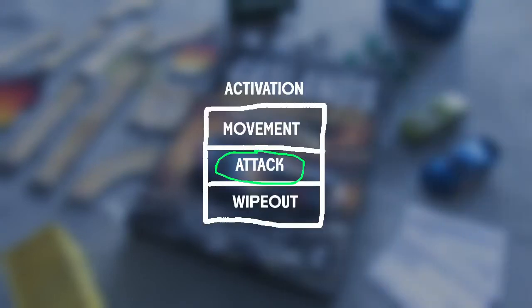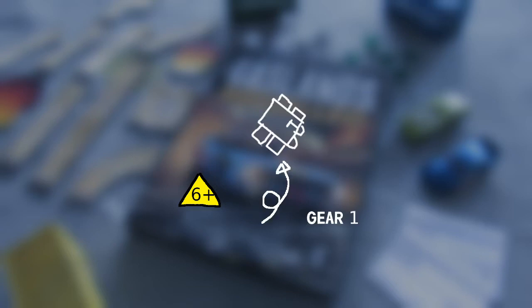That covers the basics of attacking, so now we are on to the final step of the activation, the wipeout step. In a nutshell, the wipeout step is fairly simple. If you have six or more hazard tokens, you proceed to wipeout. First you do a flip check and resolve the flip if you fail. Regardless of whether you flip check or not, you then proceed with the rest of the wipeout. The car will lose control, and you will reset to gear one. But you also lose all of your hazard tokens.